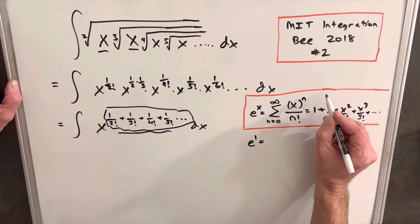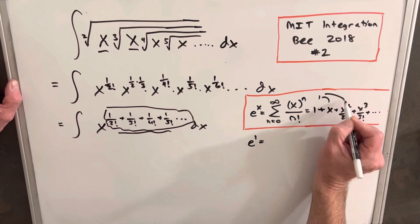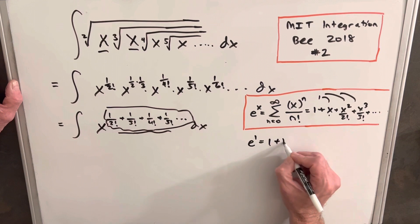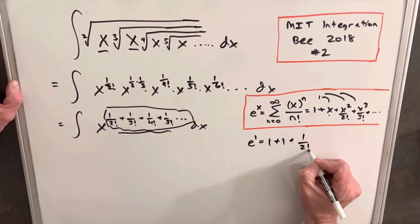And then so that's going to be just plugging in over here, like plugging in 1 into each of these x's. Okay, we're going to have 1 plus 1 here, plus 1 squared is just 1 over 2 factorial, plus 1 over 3 factorial, plus 1 over 4 factorial, dot dot dot.